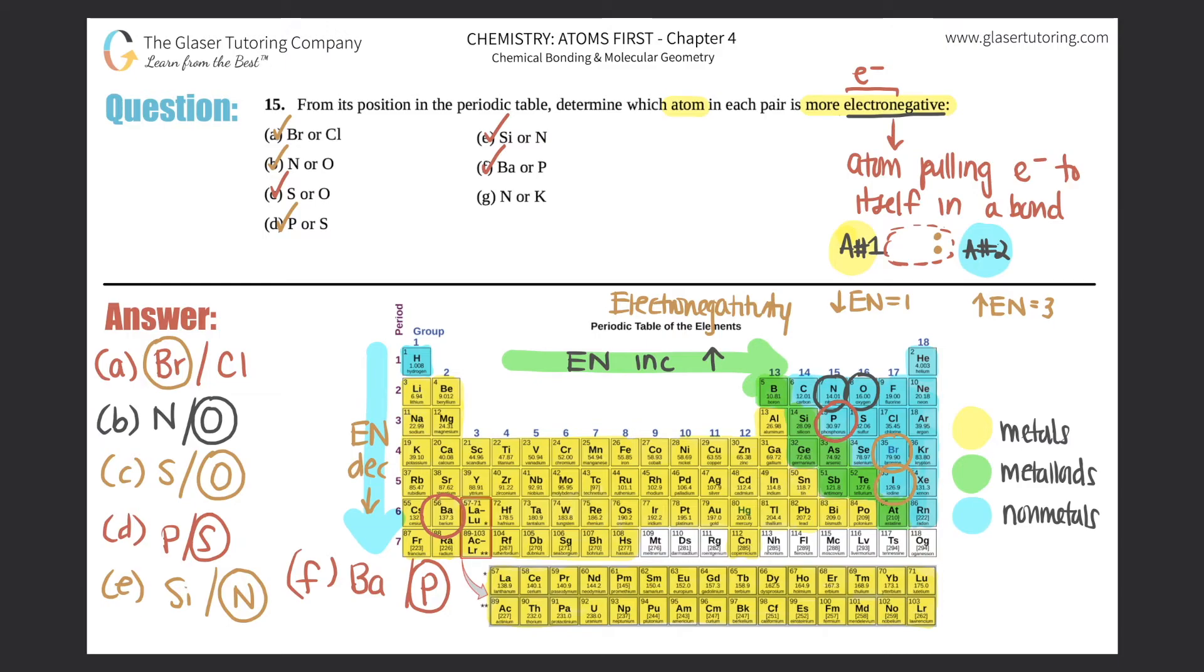And then last but not least, we got G. We got nitrogen or potassium. Kind of the same thing here, right? Nitrogen's over here. Potassium is all the way over here. You had to drop down. So you had to decrease to get to potassium. And as you go from left to right, you increase. So which one would be more electronegative? Definitely nitrogen. And once again, nonmetals are more electronegative than metals. So you could do that one as well. And that gets rid of this question.